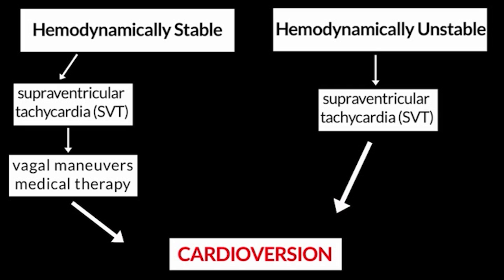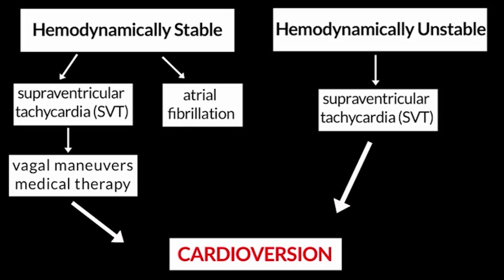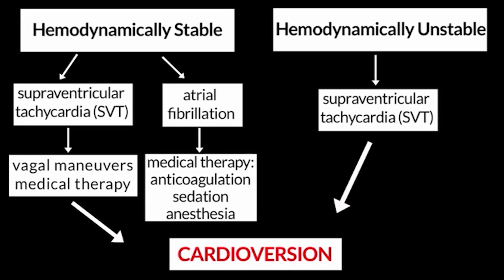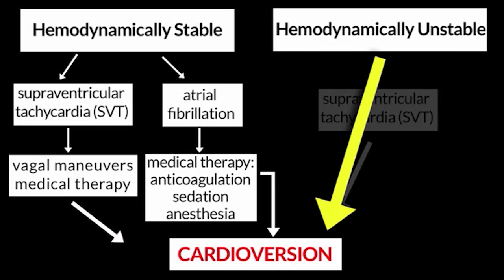Similarly, in a hemodynamically stable patient with atrial fibrillation who comes to an emergency room or ICU with a ventricular rate that is able to sustain the circulation, considerations should be given to ancillary pieces of management — for instance, the need for a period of anticoagulation before cardioversion, sedation, and possibly even anesthesia because these are painful procedures. All of these considerations are not things that you should dwell on in a hemodynamically unstable patient. Hemodynamically unstable patients — you proceed straight to the shock, with your success being contingent often on how quickly you can deliver that shock.